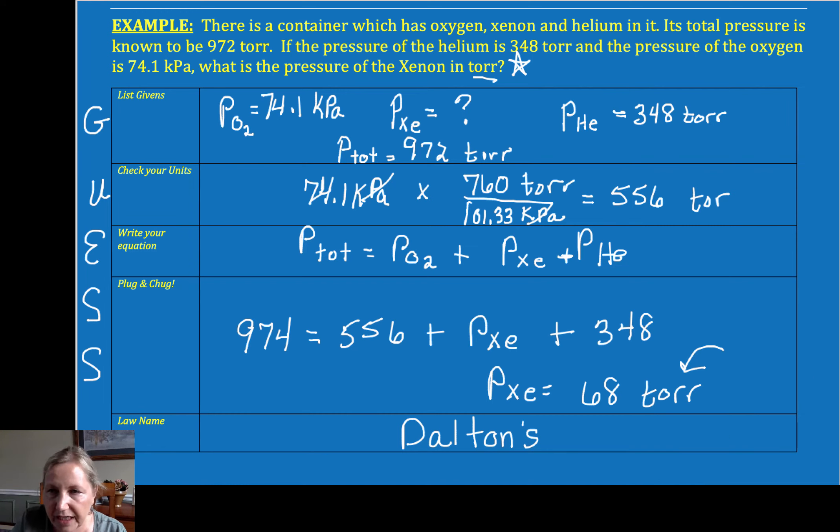Now a word about significant figures. This was an addition subtraction. So we find our furthest uncertain to the left. That furthest uncertain to the left is the one's place. This is the one's place.